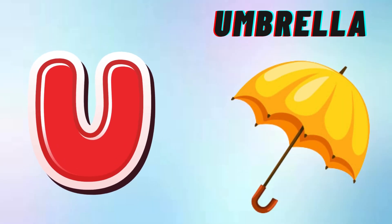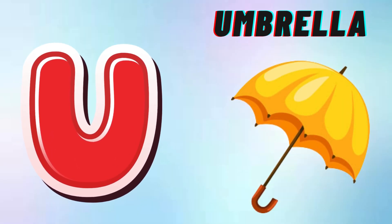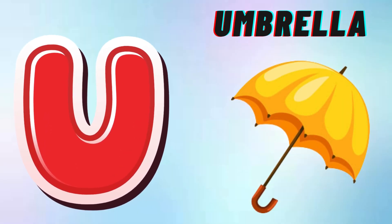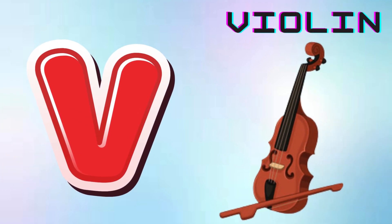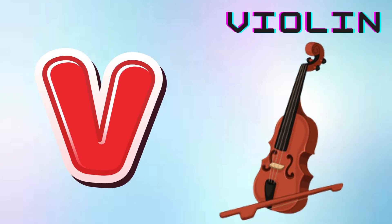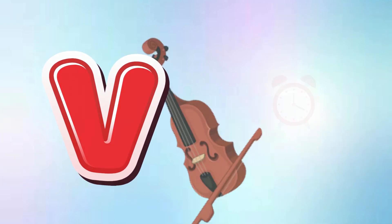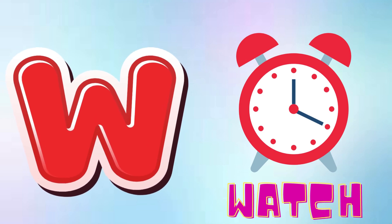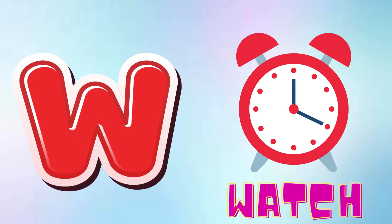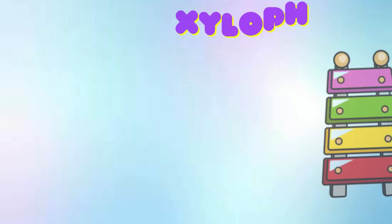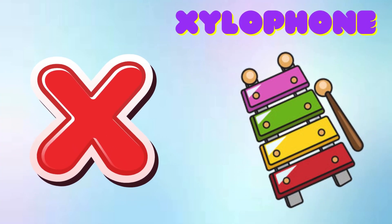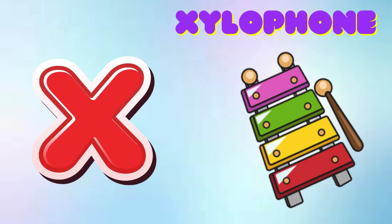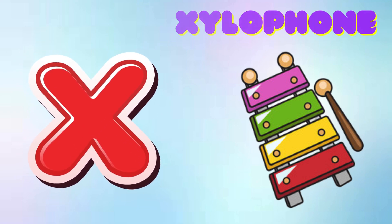U is for Umbrella, U-U-Umbrella. V is for Violin, V-V-Violin. W is for Watch, W-W-Watch. X is for Xylophone, X-X-Xylophone.